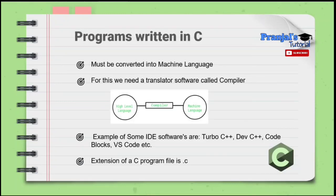Programs written in C are compiled. When we write a C language program, we need to convert it into machine language so the computer can understand it. This is done using a translator software, called a compiler. The compiler converts our high-level language program into machine language. This entire process is known as compilation.